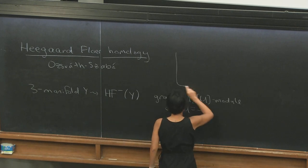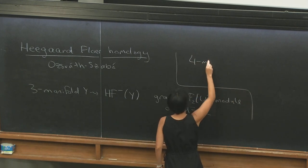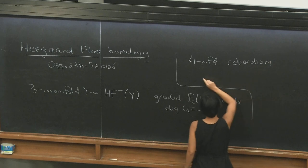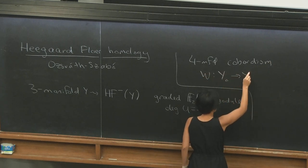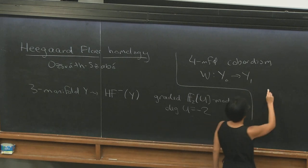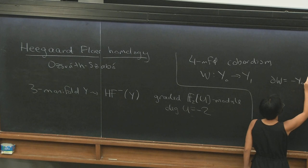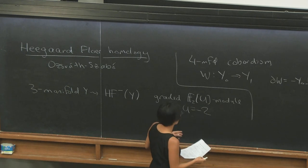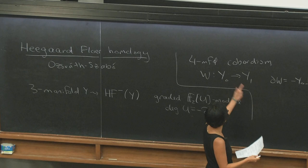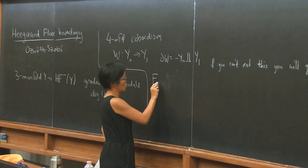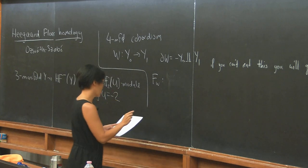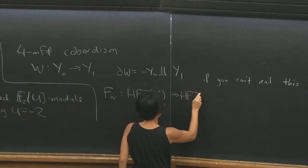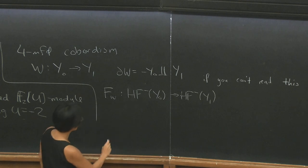You can also use this to study four-manifolds. Suppose you have a four-manifold cobordism W from Y₀ to Y₁, meaning the boundary of W is minus Y₀ disjoint union Y₁. To such a cobordism we get a map between the Heegaard Floer homologies of the boundaries: a map F_W, going from HF⁻(Y₀) to HF⁻(Y₁), which is a module homomorphism.